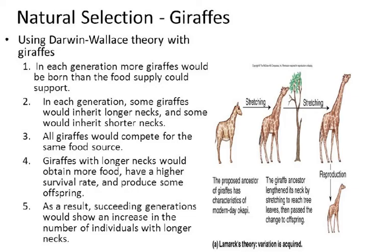Another example is the natural selection of giraffes using the Darwin-Wallace theory. In each generation more giraffes could be born than the food supply could support. Some would inherit longer necks and some shorter necks. All giraffes compete for the same food source, but giraffes with longer necks would obtain more food, have a higher survival rate, and produce more offspring. As a result, succeeding generations show an increase in the number of individuals with longer necks. Once there were short-necked giraffes too, but they no longer exist — they didn't have enough food and died out.